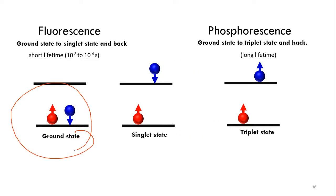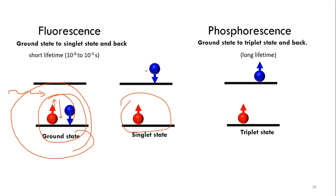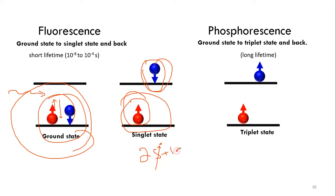According to the Pauli exclusion principle, electrons live in pairs in orbitals — one is spin-up and the other is spin-down. When we shine light and an electron excites from the valence band to the conduction band, the spin is not changed. By the rule of multiplicity (2S + 1), the spins are opposite to each other — net spin is zero — so the multiplicity equals one. This is called the singlet state.